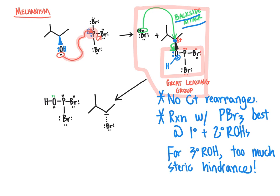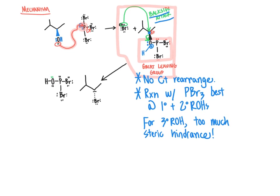As an alternative, phosphorus trichloride, PCl3, can be used if the goal is to insert a chlorine atom into the molecule in place of the hydroxyl group rather than bromine. It reacts analogously in terms of mechanism and offers the same advantages.